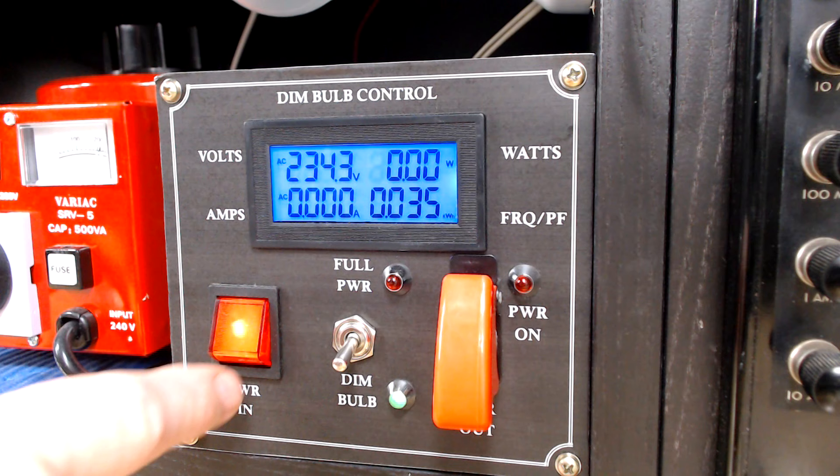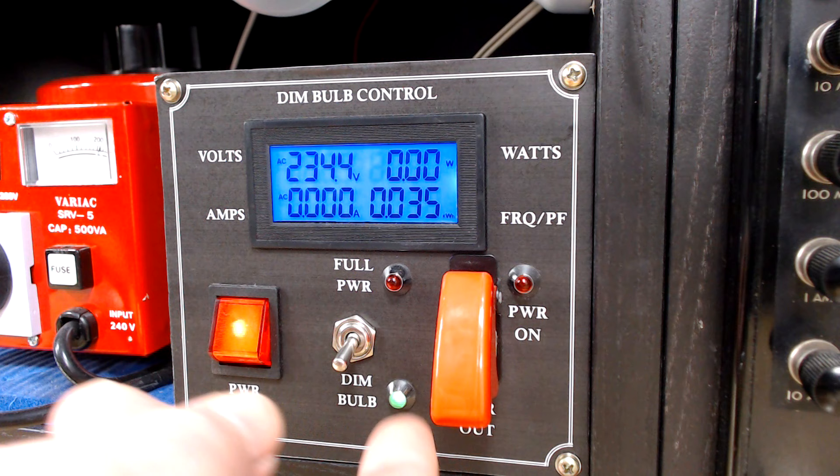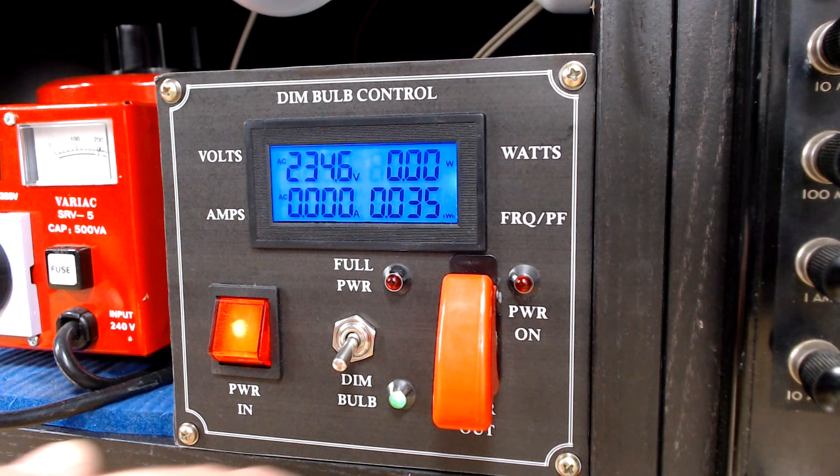Just to get back to this box here, it looks fancy, but there's really nothing to it. It's got a power on off switch, a dim bulb or full power switch, and then a master switch to let that power get out to the outlet. Now I put a guarded switch on there so I can just flick it closed if I need to.